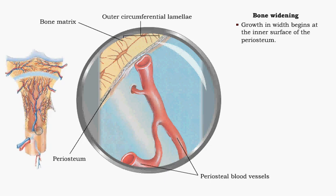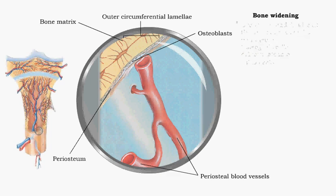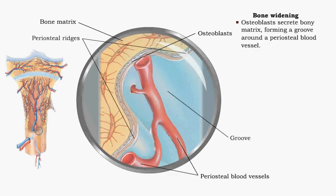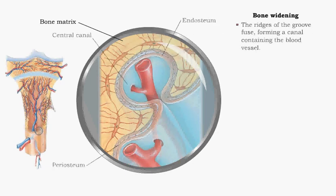At the bone surfaces, osteogenic cells in the periosteum differentiate into osteoblasts. Osteoblasts secrete matrix. Bony areas directly around a periosteal blood vessel increase, forming a groove. The ridges of the groove fold together and fuse. The blood vessel is now in a tunnel, which becomes the central canal of an osteon.